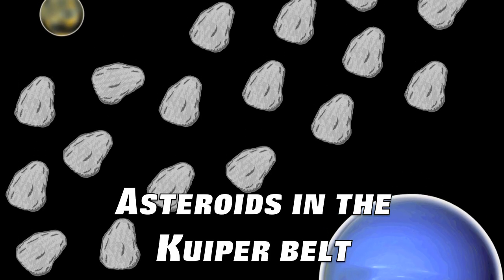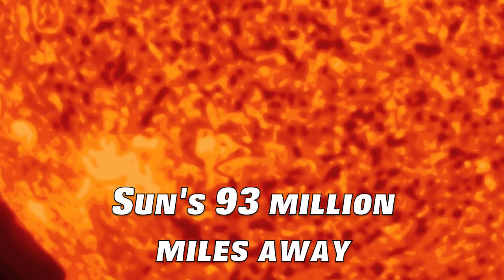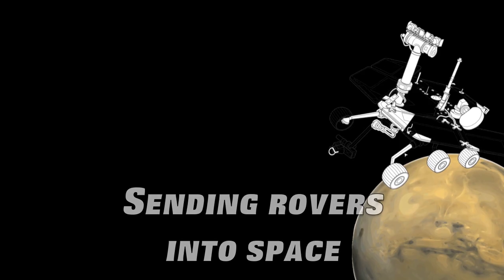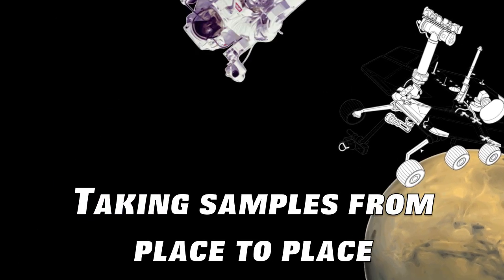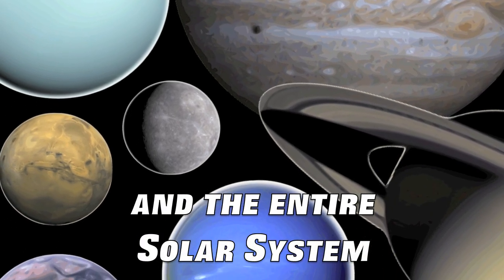Asteroids in the Kuiper belt. Sometimes an attack can be felt. Sun's 93 million miles away in a galaxy called the Milky Way. Sending rovers into space, taking samples from place to place. That's how we all learn about them and the entire solar system.